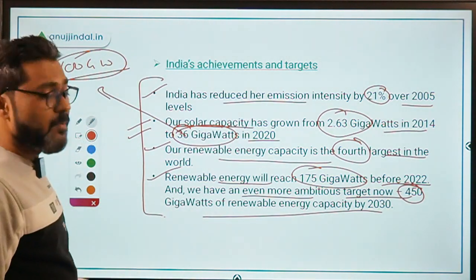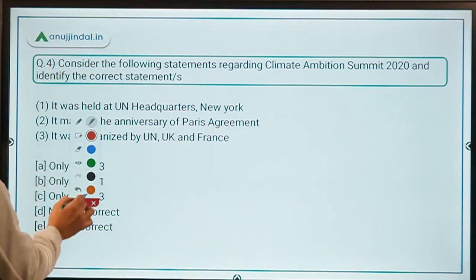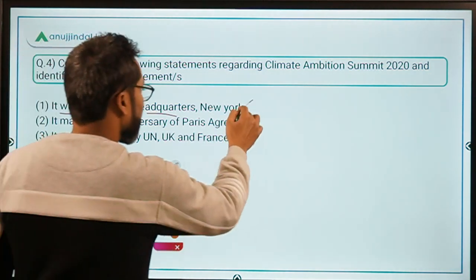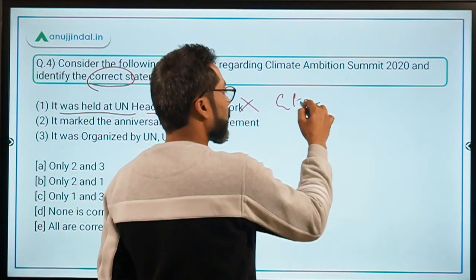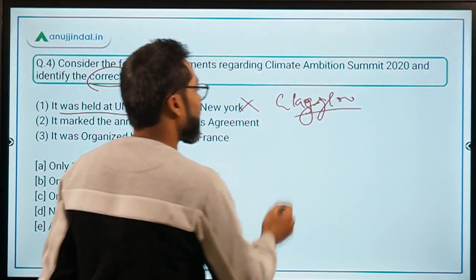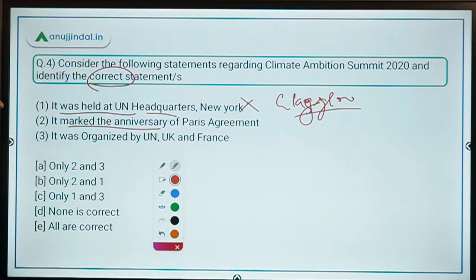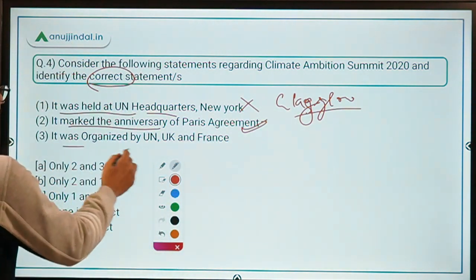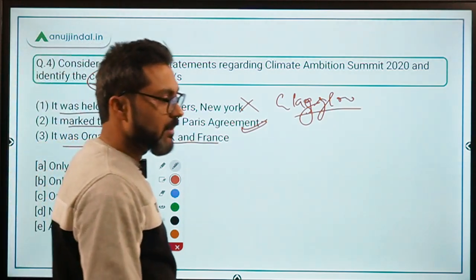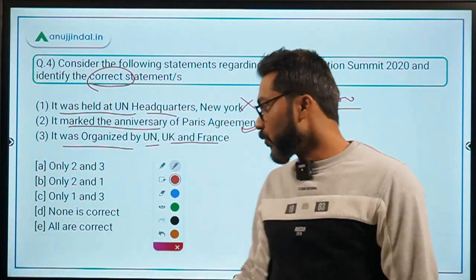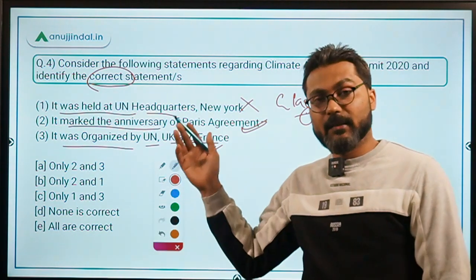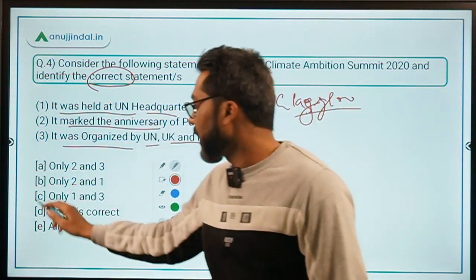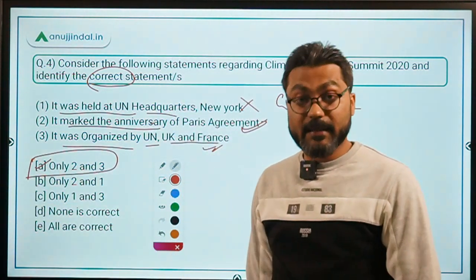Returning to the question — finding the correct statements: Statement one — it was held at United Nations Headquarters, New York — incorrect, it was held at Glasgow, Scotland. Statement two — it marked the anniversary of the Paris Agreement — correct. Statement three — it was organized by the United Nations, UK, and France — correct. Therefore, option A, only 2 and 3, is the correct answer.